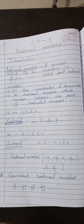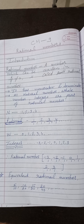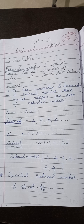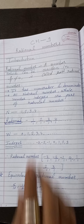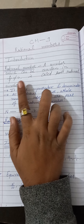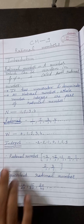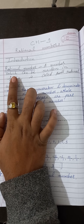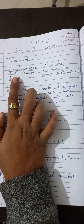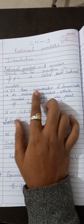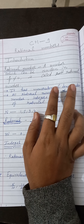Good morning students. Today we are going to learn the new chapter: Rational Numbers. A rational number is a number which can be written in the p by q form, where q cannot be zero. Here p is your numerator and q is the denominator, so it has a numerator and denominator.